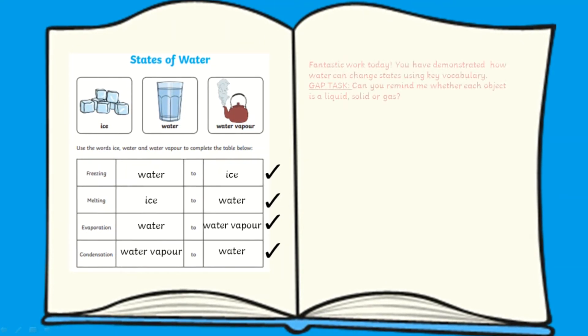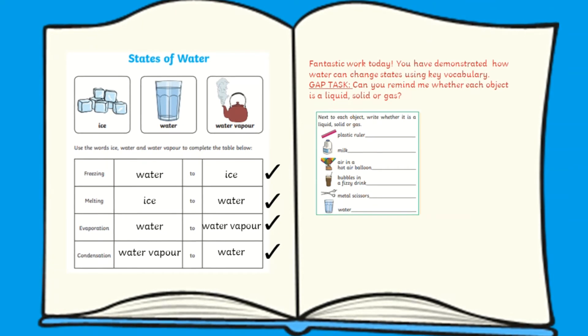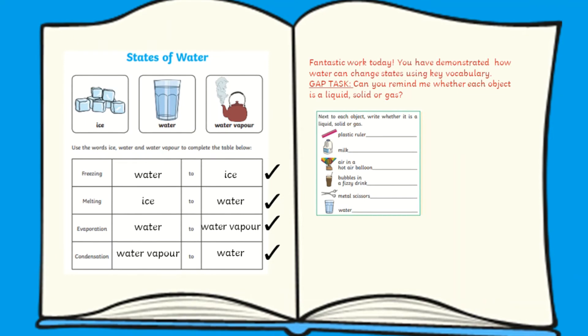Simply print, cut out an appropriate section of the revision map and glue into children's books. A great way to assess and extend children's learning further after a lesson.